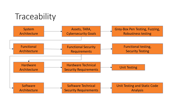The results of the cybersecurity testing should be traceable back to the cybersecurity goals. These cybersecurity goals feed into the functional architecture, from which functional security requirements are derived. We need to ensure traceability between these two. From the functional security requirements, we derive both functional test cases and security test cases, and the results of both functional and security testing must be traceable to the functional security requirements.